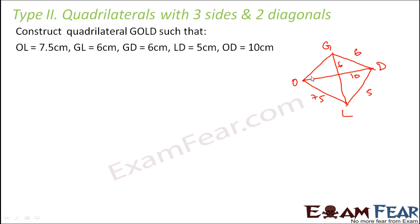So here also we will draw one of the diagonals first. So which diagonal will we draw? So we can draw any diagonal. So here we have drawn the diagonal OD first. So first we draw a line segment of length OD which is equal to 10 cm. So once we have drawn OD let us try to find out this point L because this is the triangle.